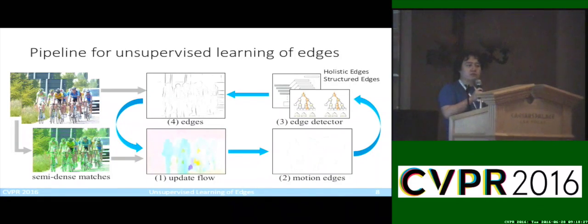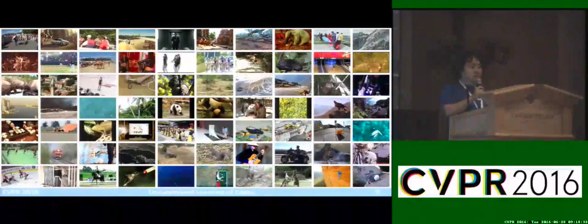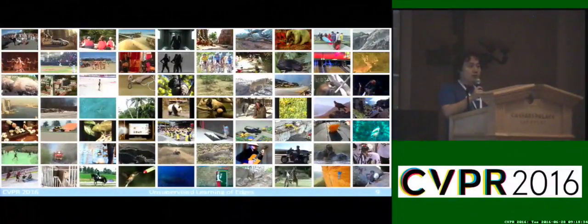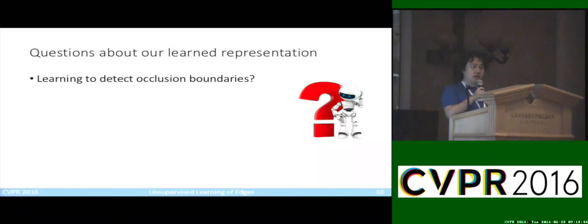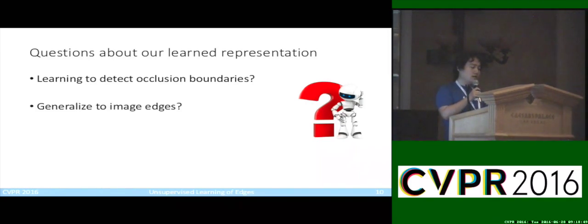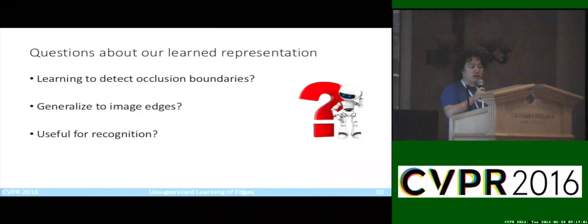Of course, this cannot be done with only a single pair of frames. Our pipeline has access to a massive amount of unlabeled videos, which you can download from the internet. Now let's take a step back and think about what we're doing here. We're learning an edge detector from motion edges — are we really just learning to detect occlusion boundaries? And how does a learned detector generalize to image edges? In addition, is this unsupervised learning of edges useful for other vision tasks, such as recognition?